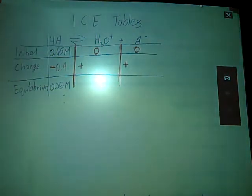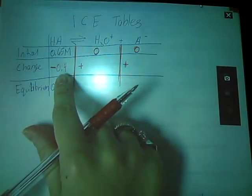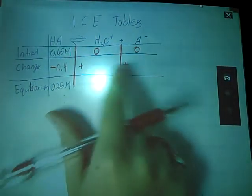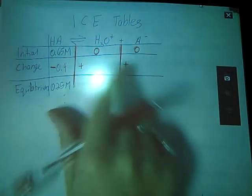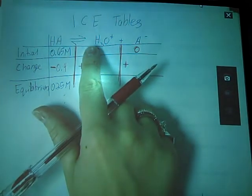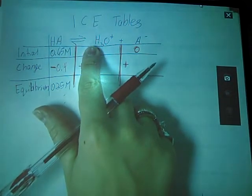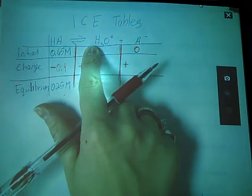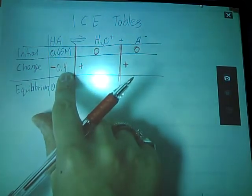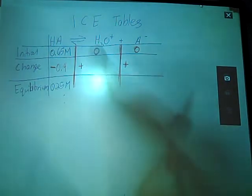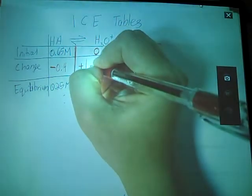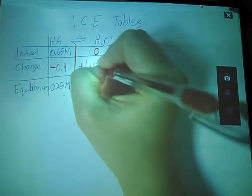By how much, you say? Well, the change is going to be the same across the board. The only difference comes in when you have some kind of coefficient up here. That would be the factor by which you would multiply your change. So in this case, I have a factor of 1 times my 0.4 change.